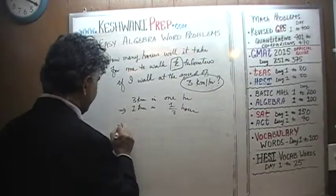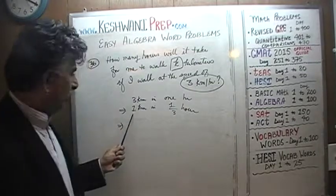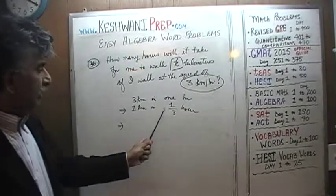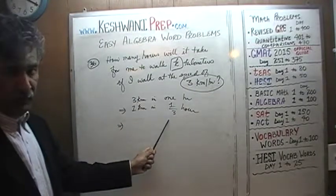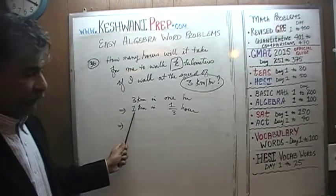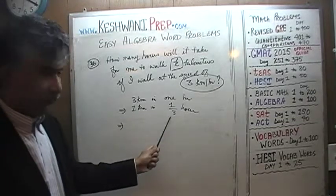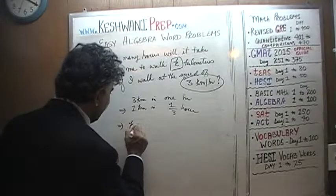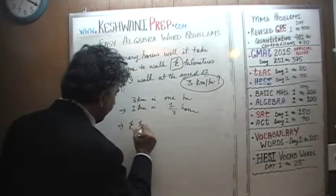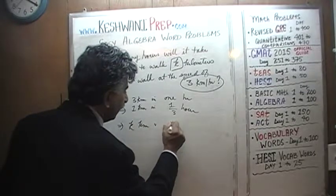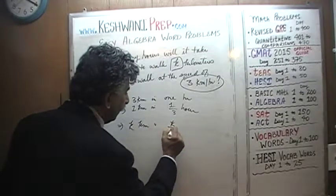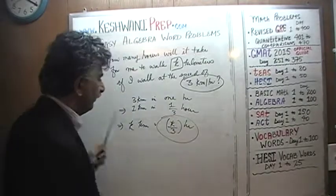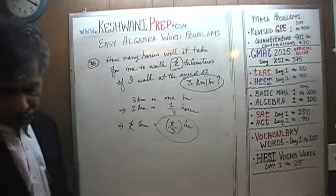I don't want to walk one kilometer, I want to walk K kilometers. If I can walk one kilometer in a third of an hour, I can walk two kilometers in two-thirds of an hour, five kilometers in five-thirds of an hour. So I can walk K kilometers in K over 3 hours. That's the answer: K over 3 hours.